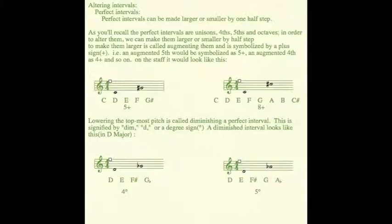Next up, we can alter an interval by lowering the top note a half step, which is called diminishing. And that's symbolized by a dim before the number, or a degree sign after the number. A diminished interval would look like this in the key of D major. You can see we start on D, and a fourth above the D would be G. And to make it diminished, we need to make it a G flat. And that would sound like this.